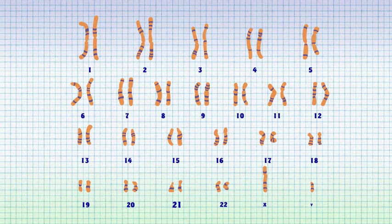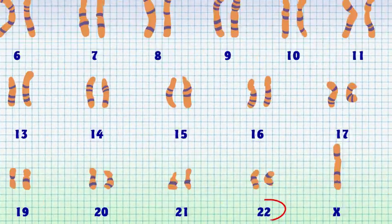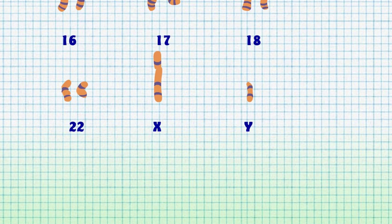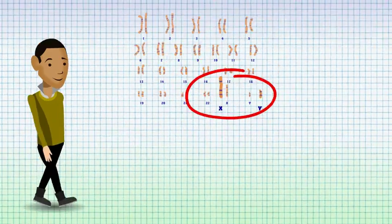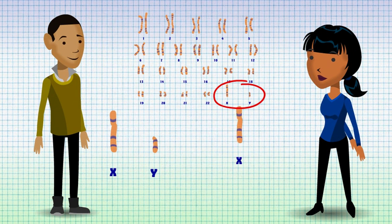Our chromosomes are numbered from chromosome 1 to 22, with chromosome 1 being the largest chromosome and chromosome 22 being the smallest. The last pair of chromosomes are the sex chromosomes, with boys having an X and a Y and girls having two X chromosomes.